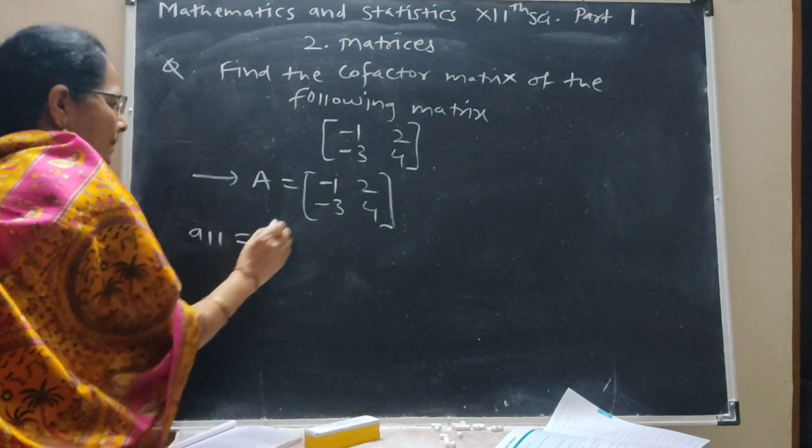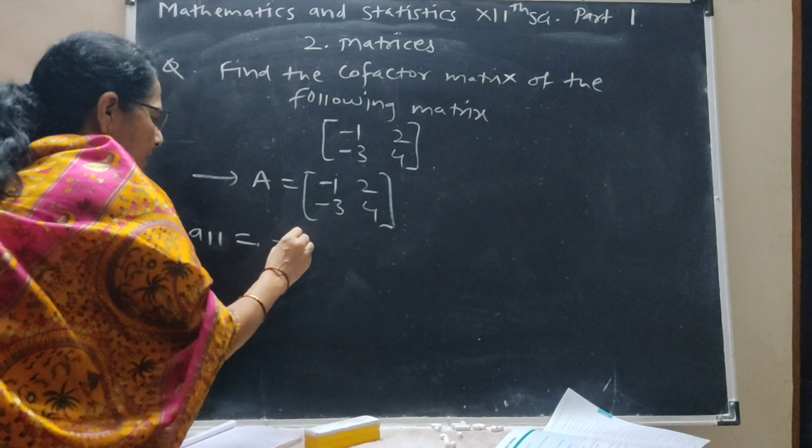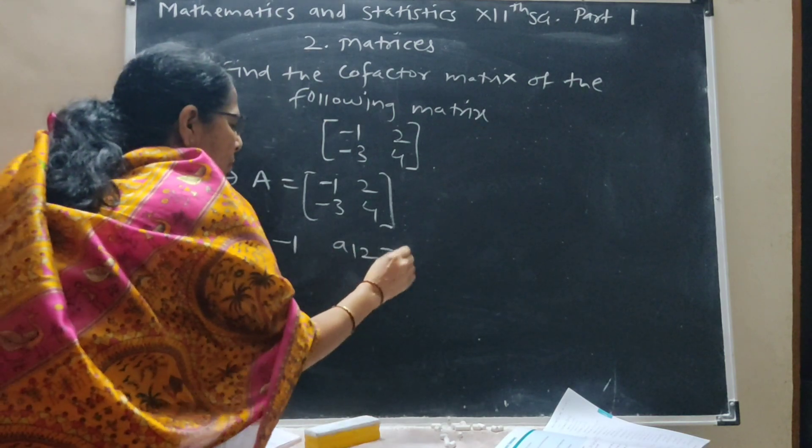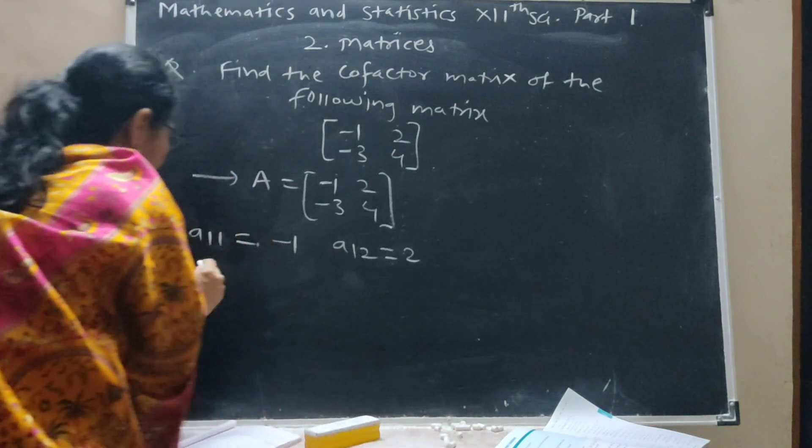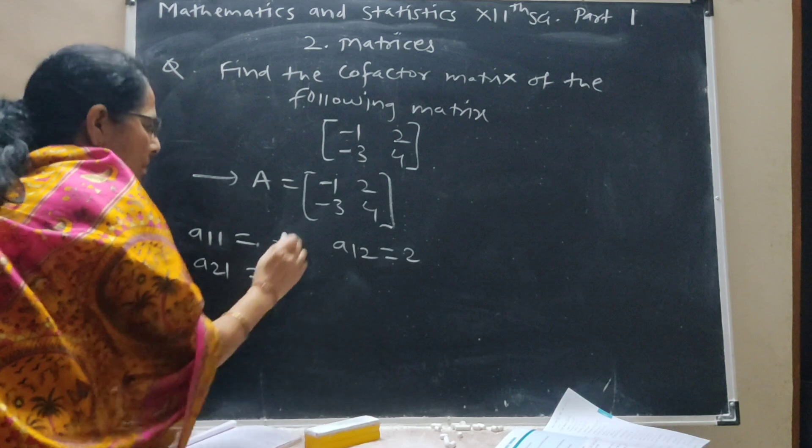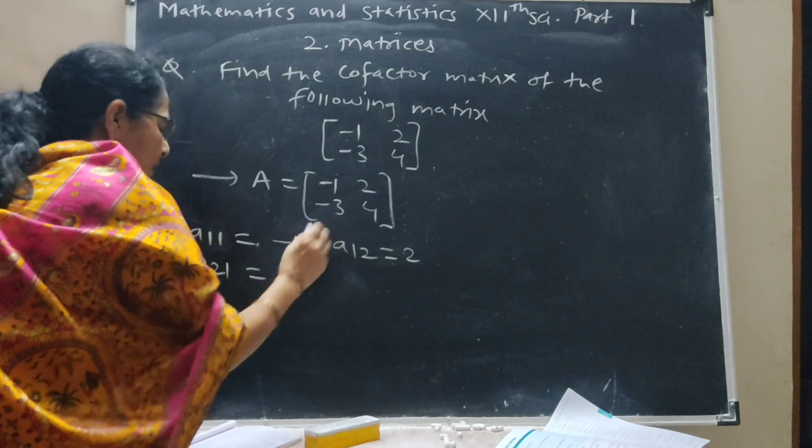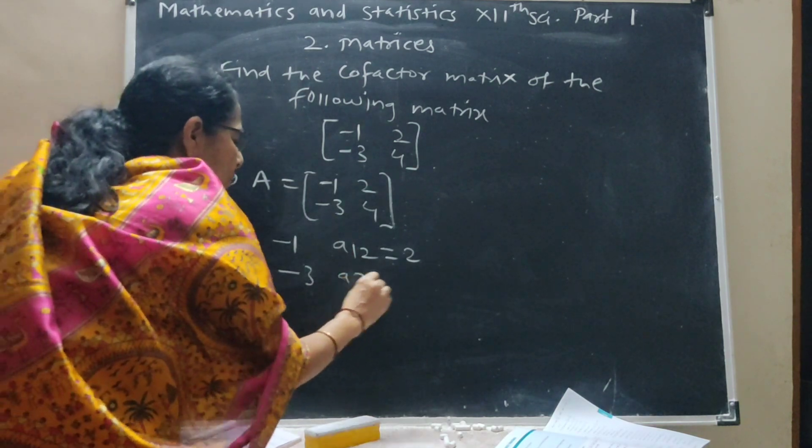Here A11 is this element minus 1, A12 is this element 2, A21 is second row first column minus 2, and A22 is this element 4.